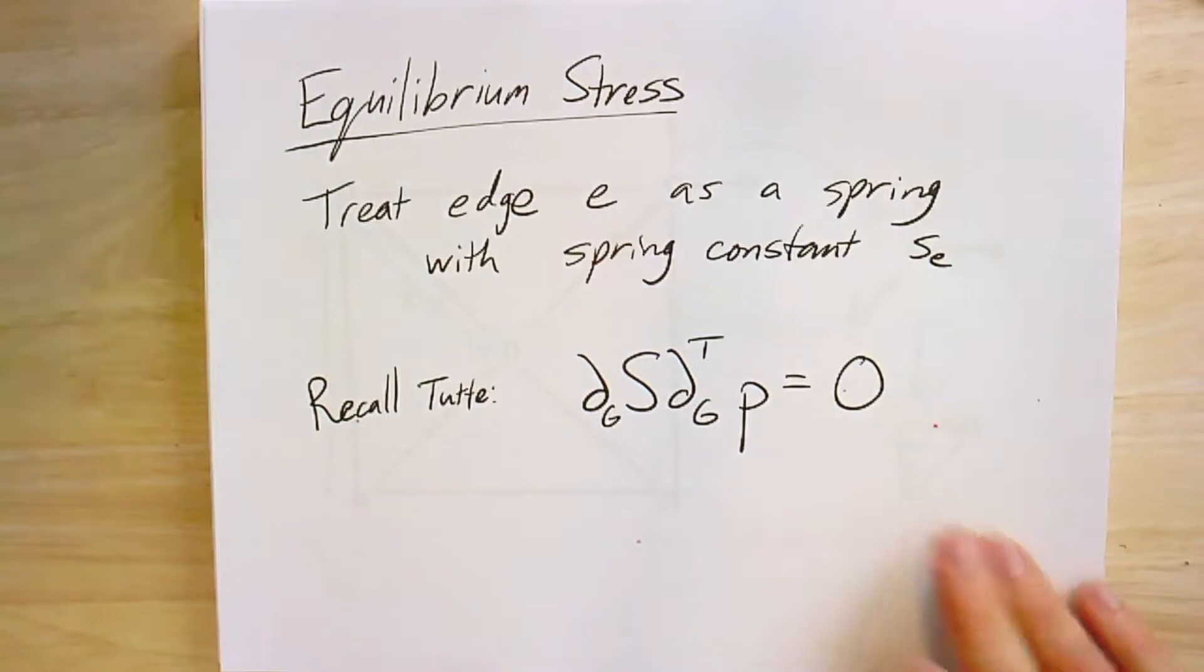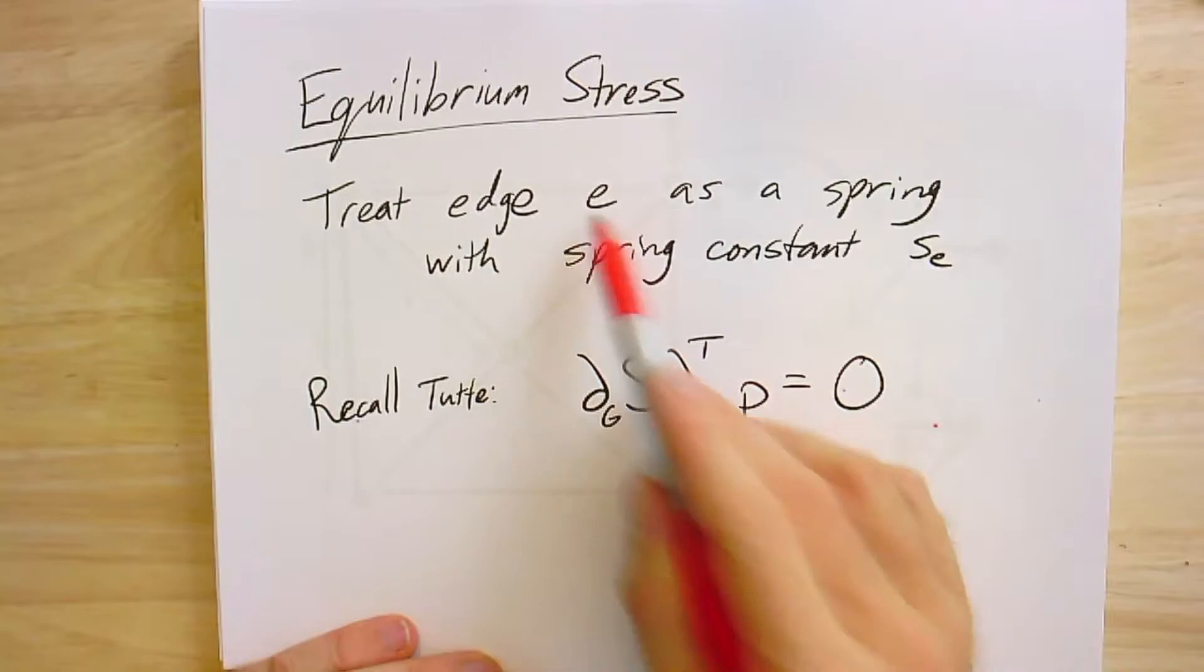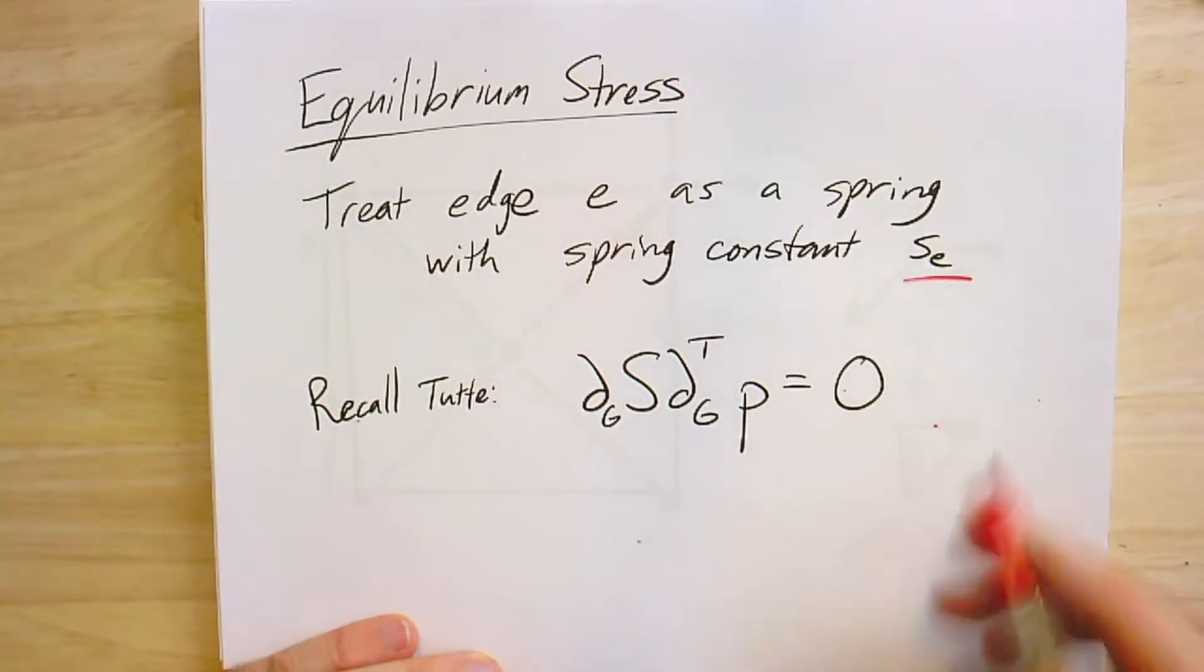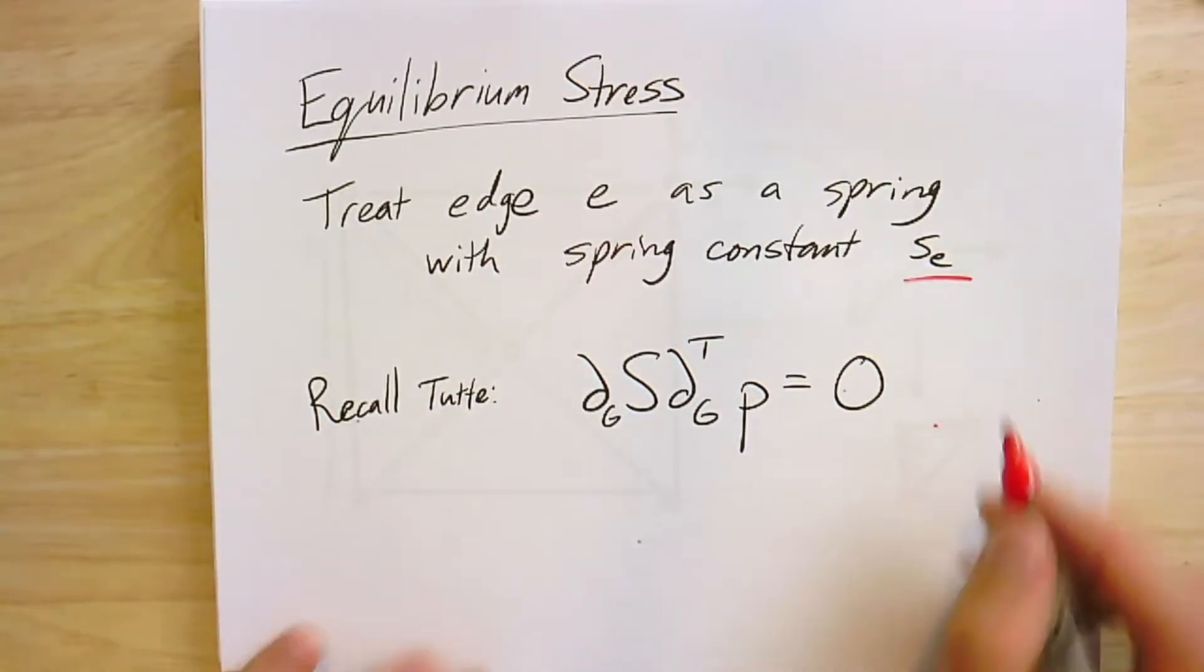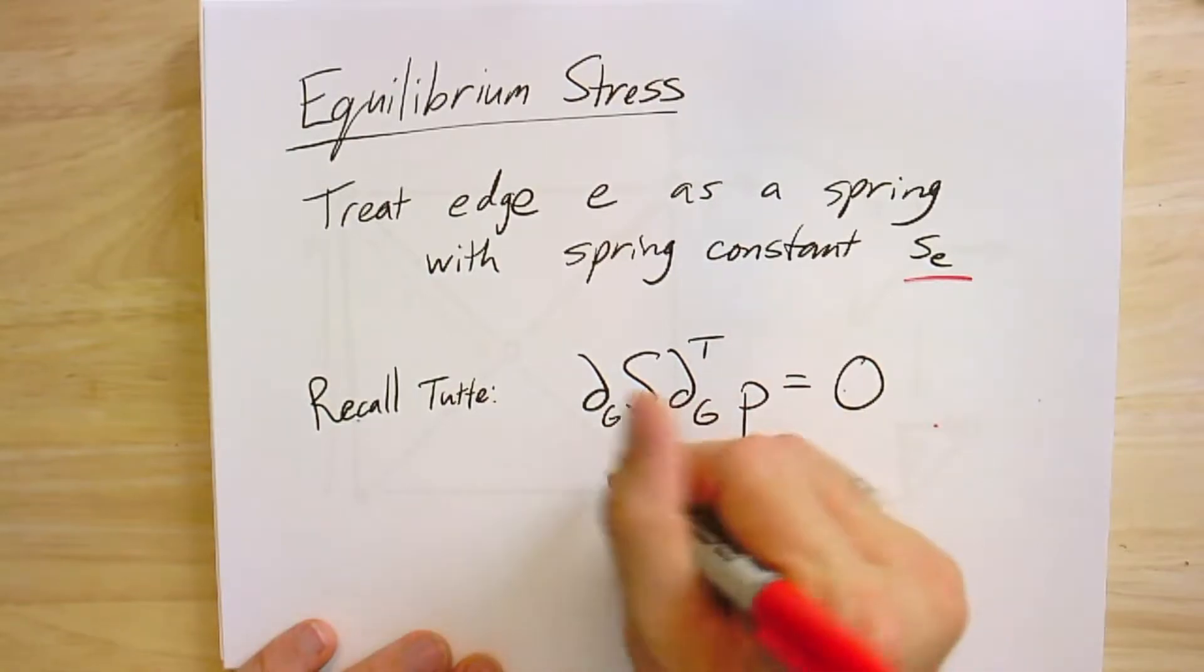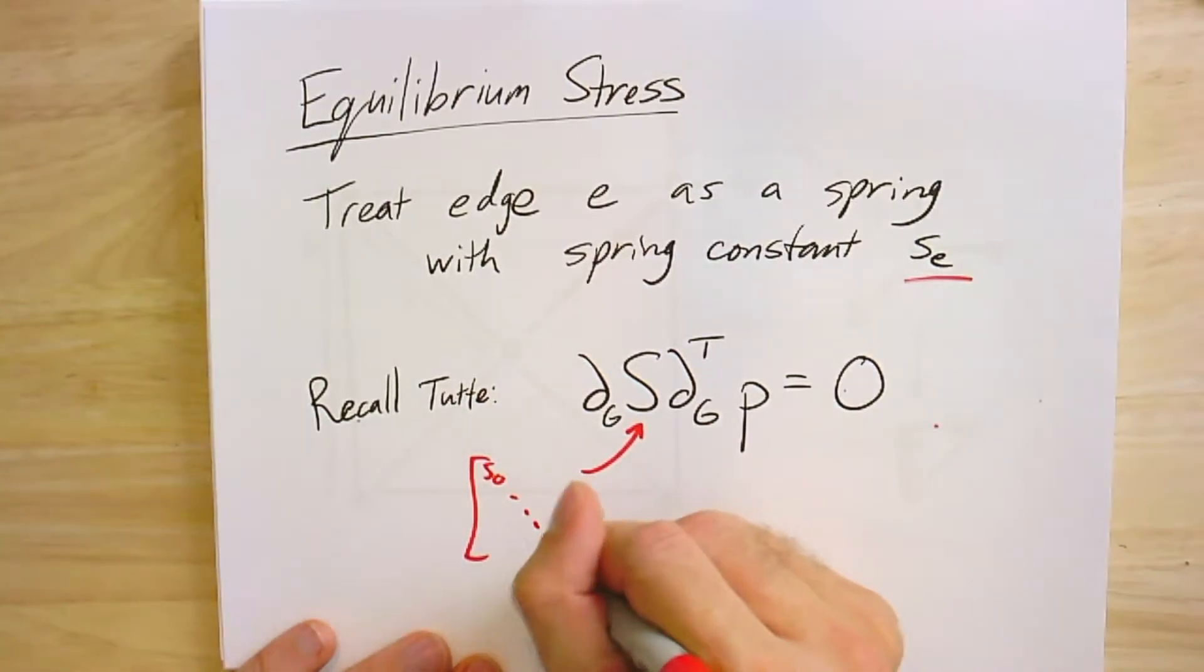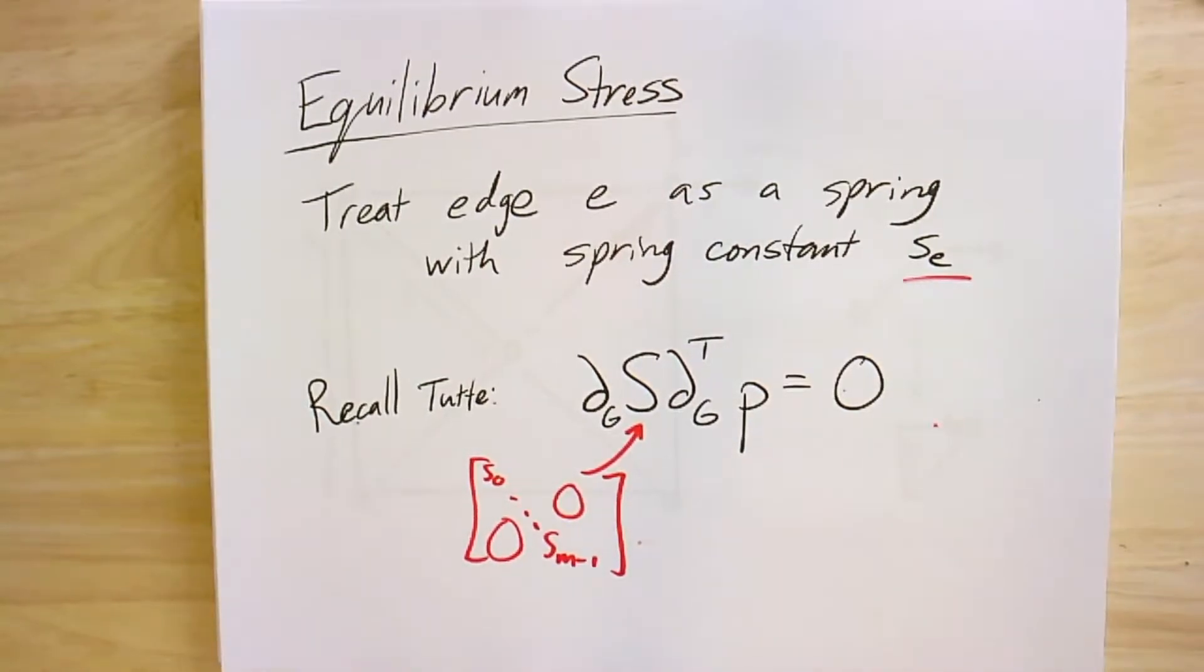Alright, first, what really is an equilibrium stress? We're going to treat each edge as a spring. So E is an edge, SE is going to be its spring constant. And just like we saw with circuits, in order to get a kind of Laplacian-like system to describe the net forces, rather than just taking the standard Laplacian, we put a diagonal matrix in the middle, where this big matrix S is the matrix with all the spring constants in it.